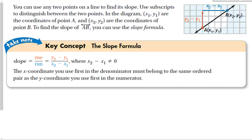We can use any two points on a line to find the slope, using subscripts to distinguish between them. In the diagram, (x₁, y₁) are the coordinates of point A and (x₂, y₂) are the coordinates of point B. These are subscripts — not exponents. An exponent like x² means x squared, while a subscript just differentiates one term from another.